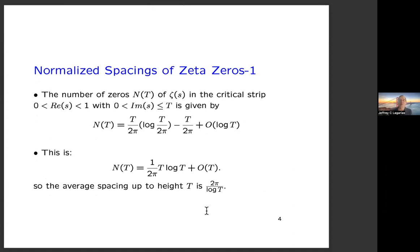This talk is concerned with the spacings of the zeta zeros. The number of zeros of zeta of s in the critical strip — real part between zero and one, imaginary part between zero and T — has the well-known formula T over 2π log(T/2π) minus T/2π plus a small error O(log T). The main term gives an average spacing of a zeta zero up to high T of 2π over log T.